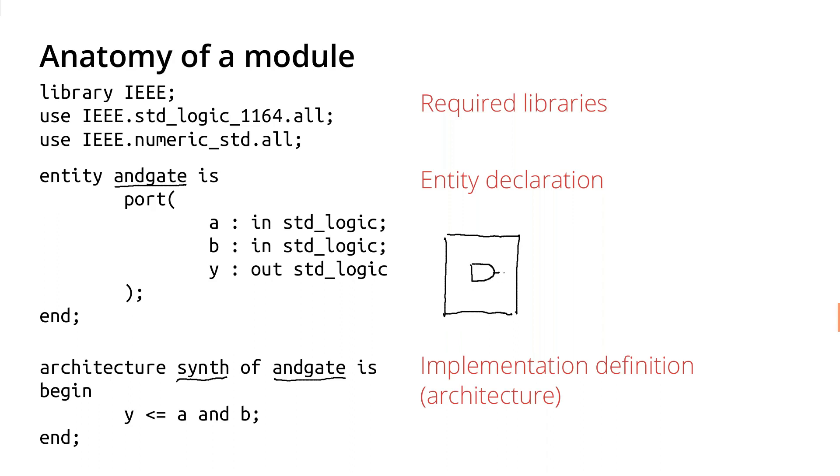And coming out, that's Y. And then A and B are just our inputs here. And they go into the AND gate. So that's the anatomy of a very simple AND gate module.